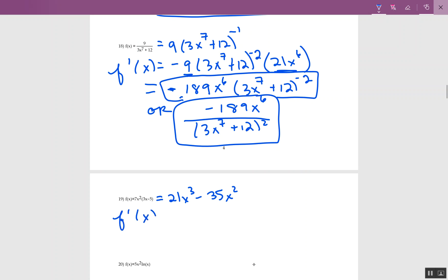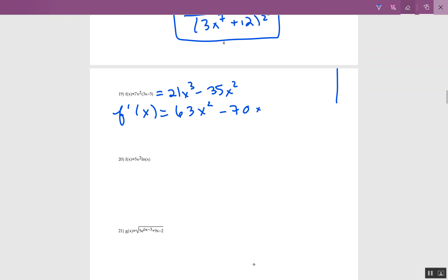Now this is an easy one. The 21 times 3 is 63x squared. The 35 times 2 is 70x, and we're done.